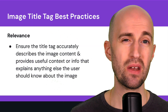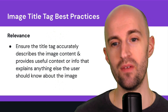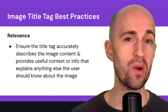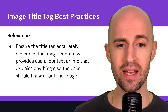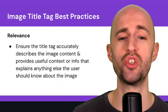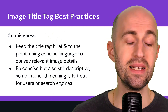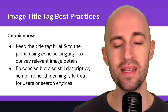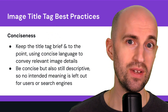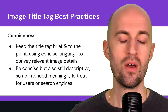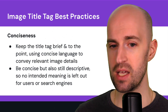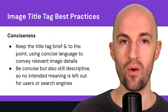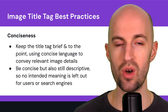So let's talk about image title tag best practices. The first one is relevance — make sure that the title tag accurately describes the image content and provides useful context or information that explains anything else that the user should know about that image. Conciseness — keep the title tag brief and to the point, using concise language to convey relevant image details. But also make sure that even though you're being concise, you're still descriptive enough so that no intended meaning is lost or left out for the user or the search engines.